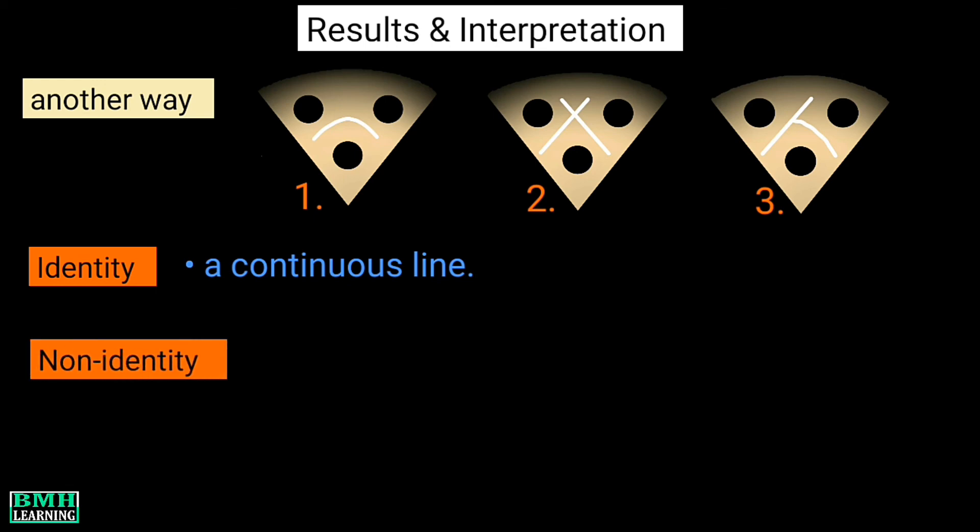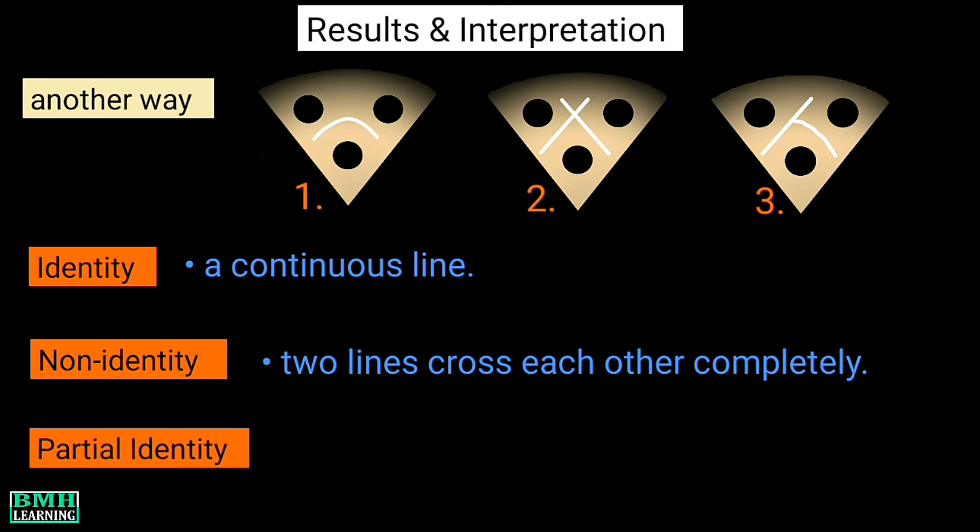Second pattern is non-identity. This shows that the two lines cross each other completely. This kind of pattern demonstrates two different reactions and gives an indication of compared antigens being unrelated. That is, no common epitope.